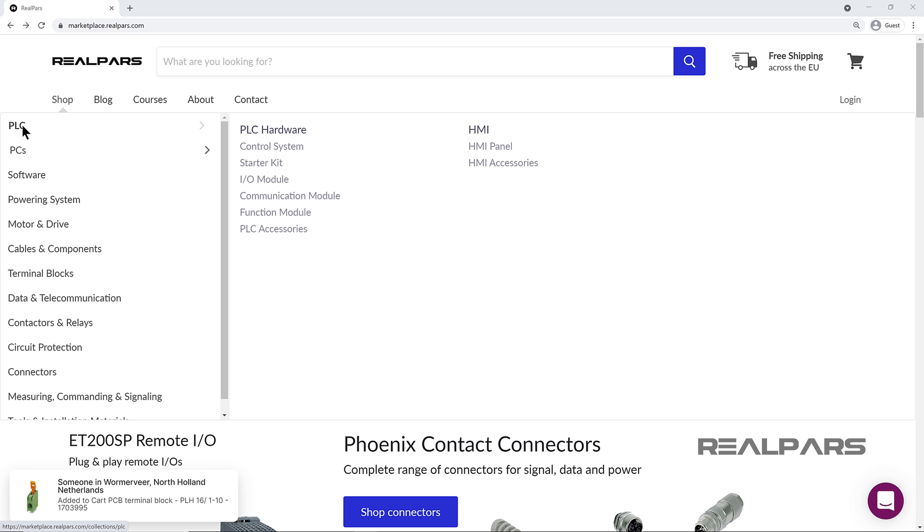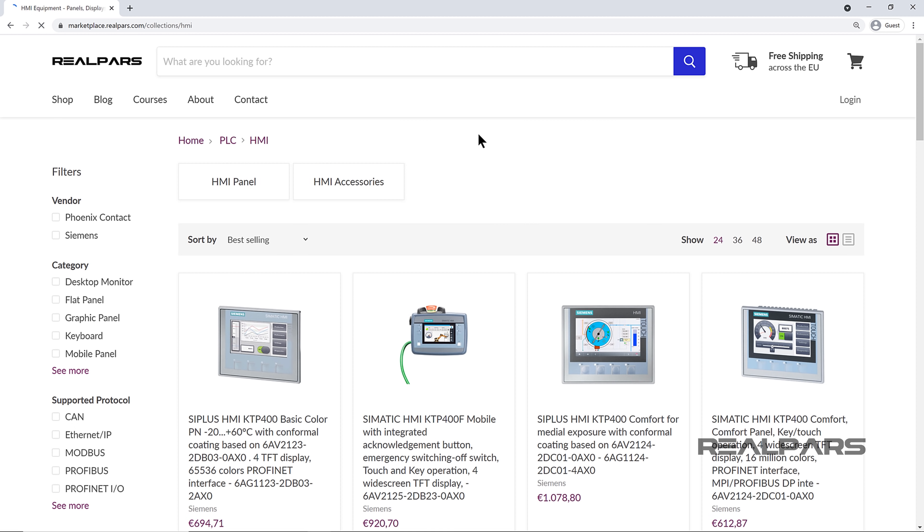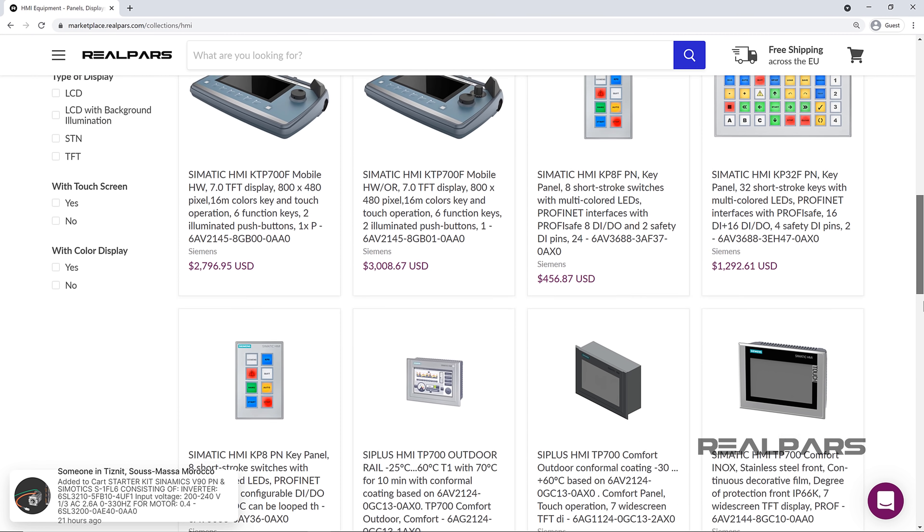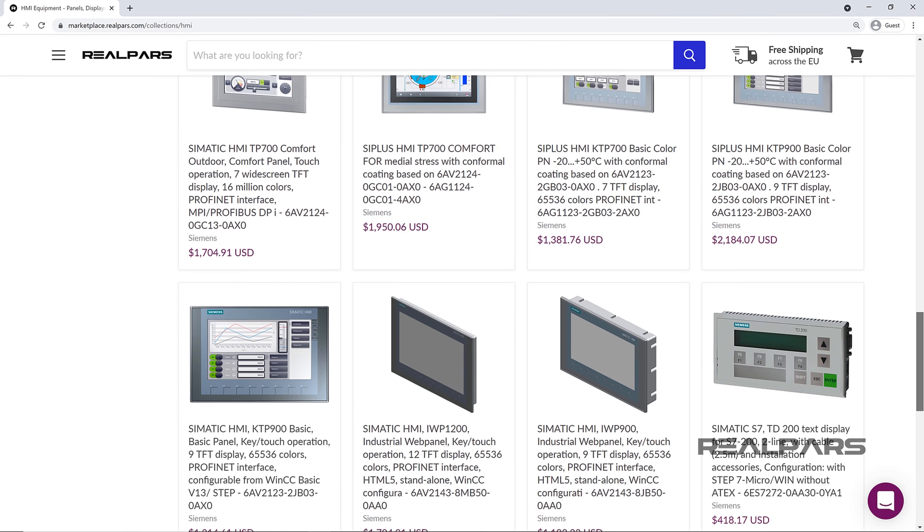If you need HMIs for your projects, you can easily order them online from the RealPars Marketplace. Just head on over to Marketplace.RealPars.com. You can find the link to this website in the video description.